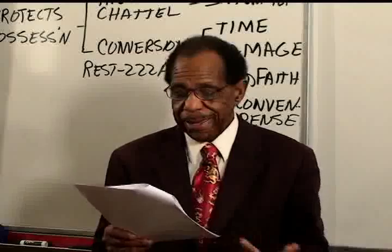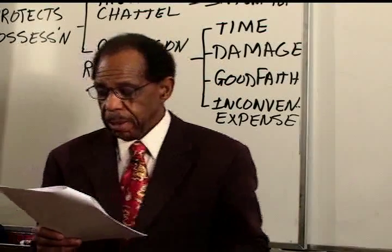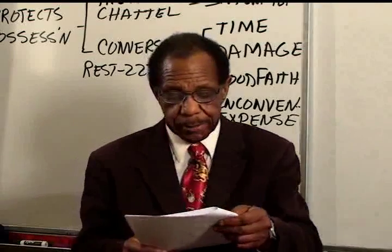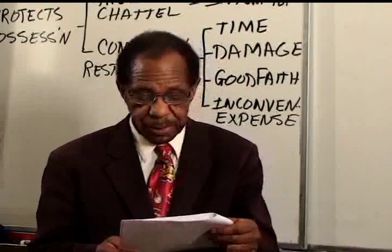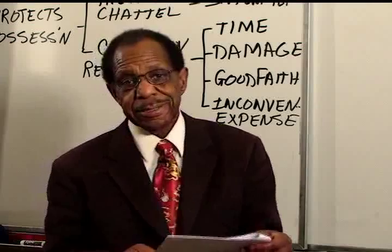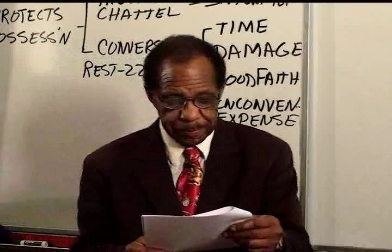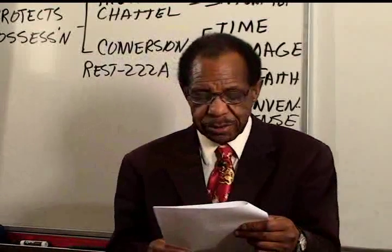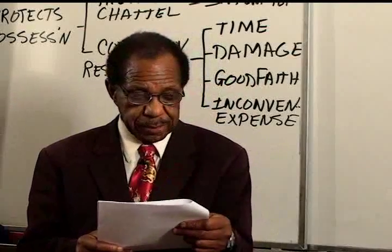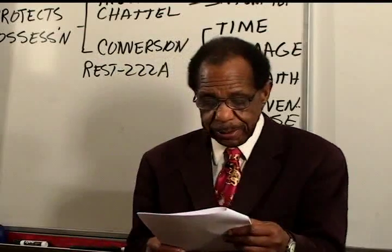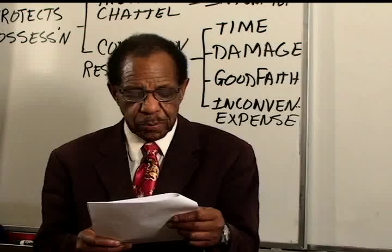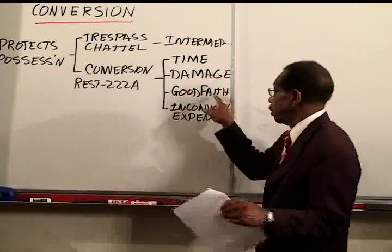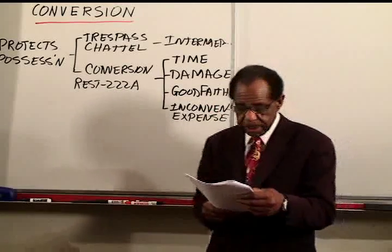Illustration 21: A entrusts an automobile to B, a dealer, for sale. On one occasion B drives the car on his own business for 10 miles. This is not conversion. Illustration 22: Same facts except that B drives the car for 2,000 miles. This is a conversion — you can see the duration factor was changed. Illustration 23: Same facts except the car dealer uses the car for illegal transportation of narcotics, and as a result it is confiscated by the federal government. This is a conversion. Illustration 24: B drives the car with the intent to appropriate it and deprive A of its use. This changes the good faith factor and is conversion.